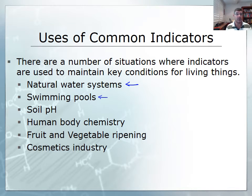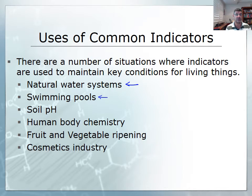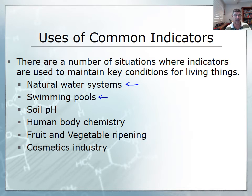Human body chemistry is also important. We breathe in oxygen and breathe out carbon dioxide, but that carbon dioxide buildup occurs in our blood systems and can change the pH of the blood. We also secrete a very strong acid, hydrochloric acid, in our stomachs. Our own bodies have a number of different situations where pH is quite important - production of acids in the mouth and also on the skin.